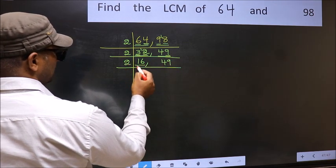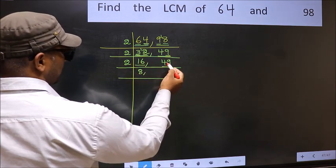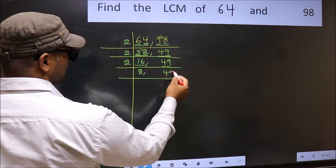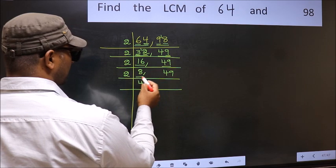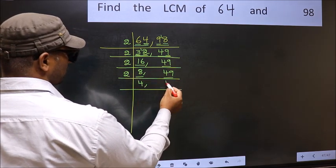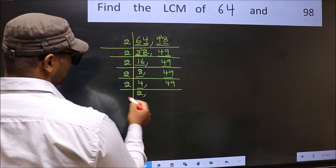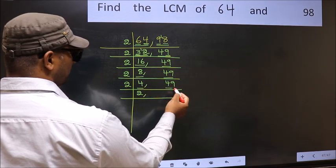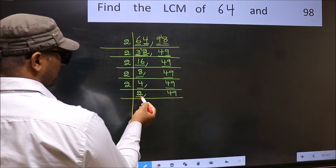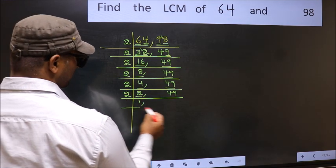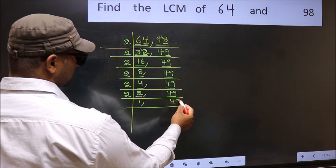Now 16: 2 times 8 is 16. The other number 49 is not divisible by 2, so write it down as it is. Now 8: 2 times 4 is 8. The other number 49 is not divisible by 2, so write it down as it is. Now 4: 2 times 2 is 4. The other number 49 is not divisible by 2, so write it down as it is. Now we have 2 — 2 is a prime number, so 2 times 1 is 2. The other number 49 is not divisible by 2, so write it down as it is.